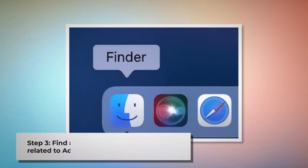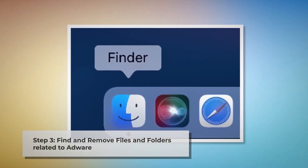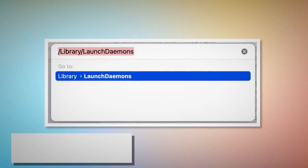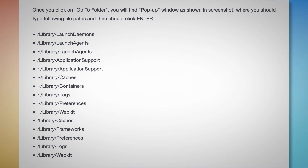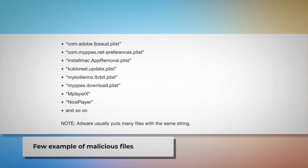Step 3: Find and remove files and folders related to Adware. Firstly, make sure you are in the Finder folder. Once you are in the Finder folder, click on Go at the top menu bar of your Mac and then Go to Folder on the drop-down menu, as shown in the screenshot. Once you click on Go to Folder, you will find a pop-up window where you should type these file paths and then click Enter. You should enter paths including Library, LaunchDaemons, LaunchAgents, Application Support, and so on, as shown here. Look for suspicious malicious files and move them to Trash. A few examples of such malicious files are shown here. Note: Adware usually puts many files with the same string.